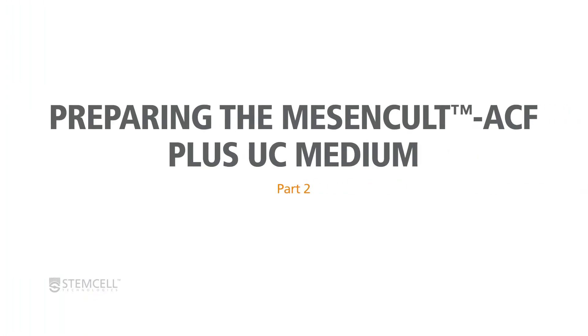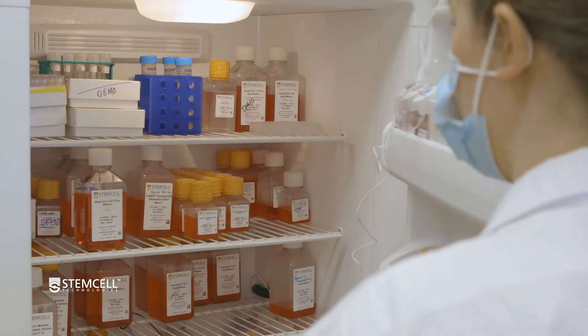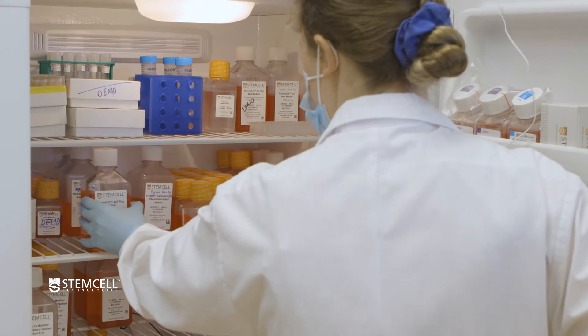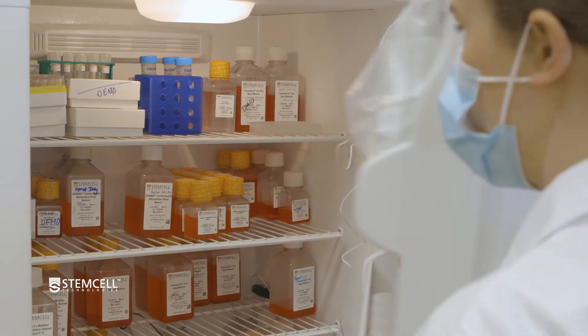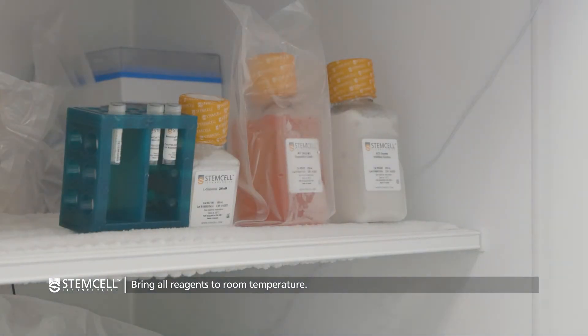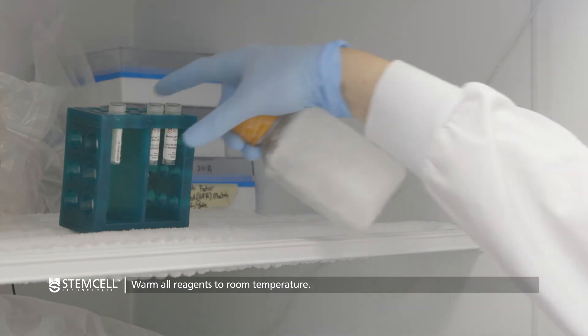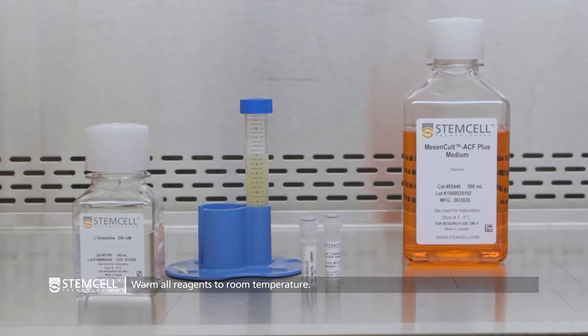Next, prepare the complete MesenCult ACF Plus Umbilical Cord Medium. Before you begin, remove the bottle of MesenCult ACF Plus Medium from the refrigerator and place it on the bench top to bring to room temperature. Remove the vials of MesenCult Umbilical Cord Derivation 500X Supplement, L-Glutamine, and Gentamicin from the freezer and leave them to thaw at room temperature.